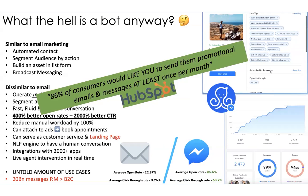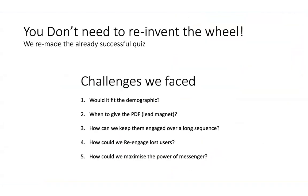The most important thing to take away today: HubSpot — a very well-known email marketing CRM — conducted a study recently which says 86% of consumers like you to send them promotional emails and messages at least once per month. These people want to hear from you. Times are changing. Dan then describes a vertical they've been in for a very long time as a pay-per-lead agency — testing different types of advertorial funnels and quiz funnels to get quality leads at the back of that funnel.